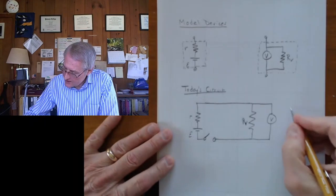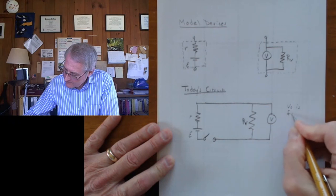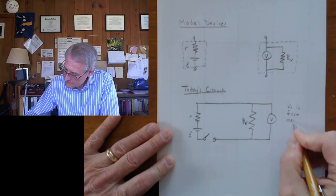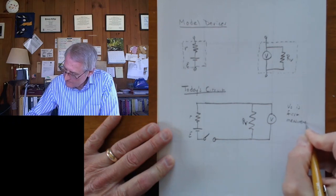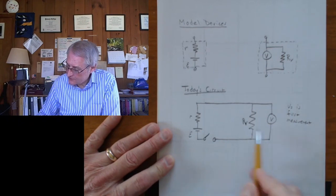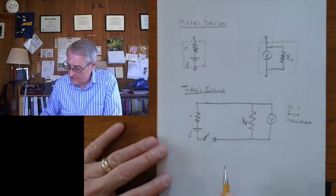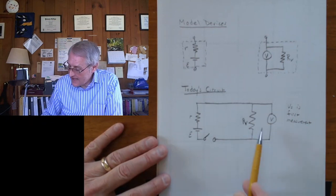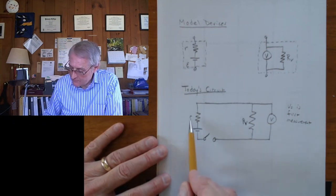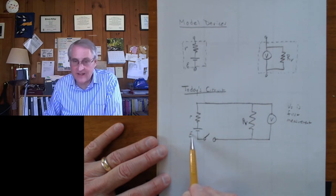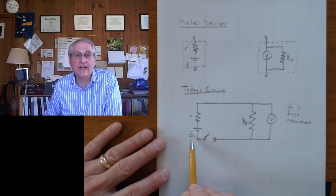The first measurement when you just connect, we'll call that V naught, zero for starting. Now that's not enough to figure out both the internal resistance and the EMF of this. We need more data.